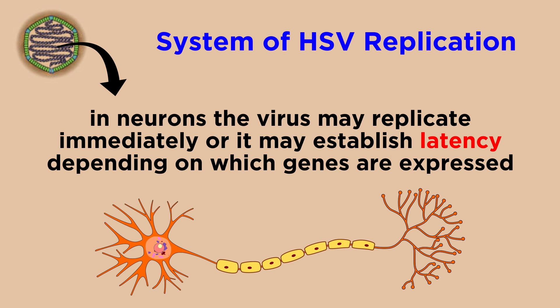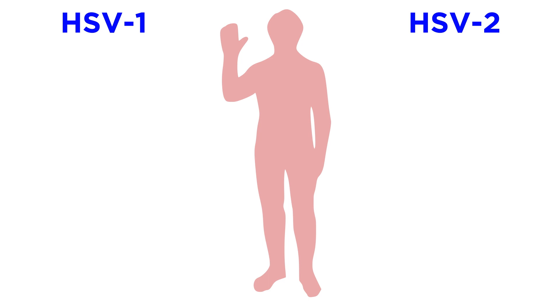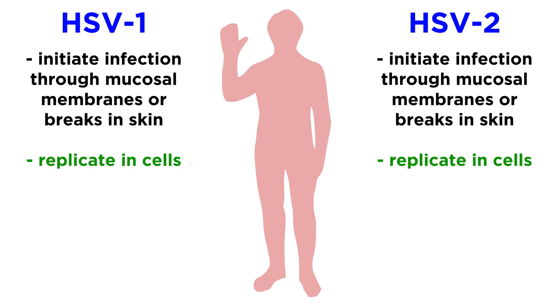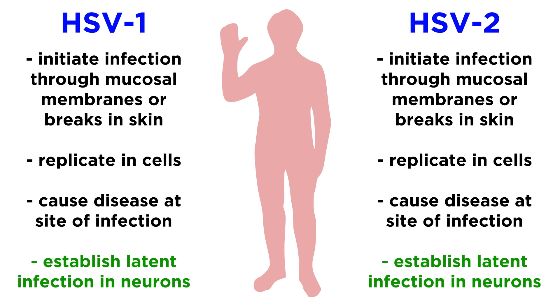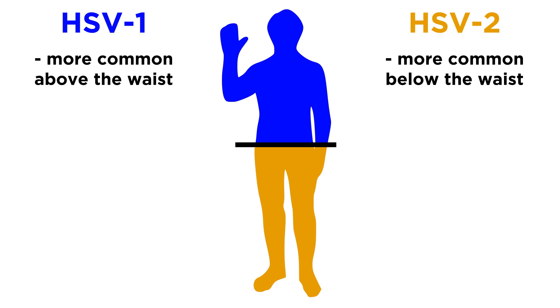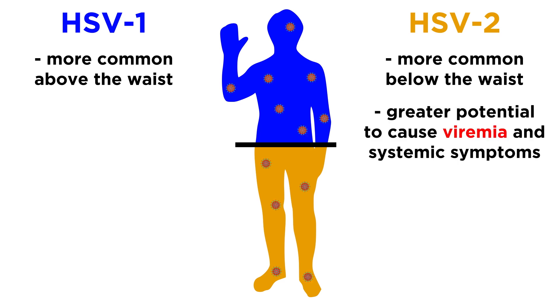In the case of neurons, the virus may either replicate immediately or establish latency, depending on which viral genes are expressed. HSV1 infection most commonly occurs above the waist, while HSV2 infection most commonly occurs below the waist — though both types can infect either region. Additionally, there are some differences in growth characteristics, and HSV2 has a greater potential to cause viremia, meaning viruses in the blood, and systemic symptoms.